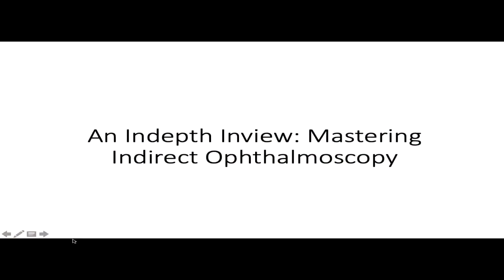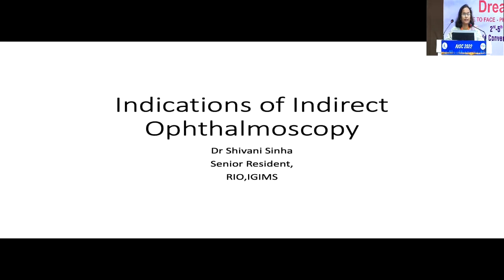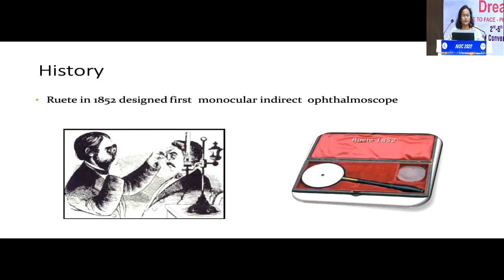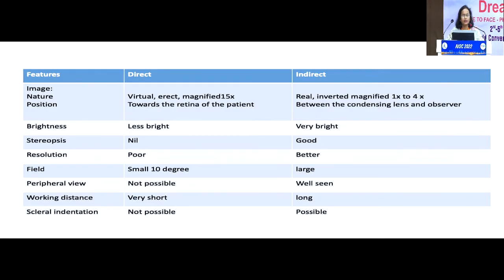Thank you for the introduction, and at the outset I would like to thank Pooja ma'am for giving me a chance in this IC. So basically, what are the indications of indirect ophthalmoscopy and why is it so important? A very brief history: it was first designed in 1852, which was monocular. Charles Schepens is considered the modern binocular indirect ophthalmoscope. This is a very familiar table which enumerates the differences between direct and indirect ophthalmoscope.